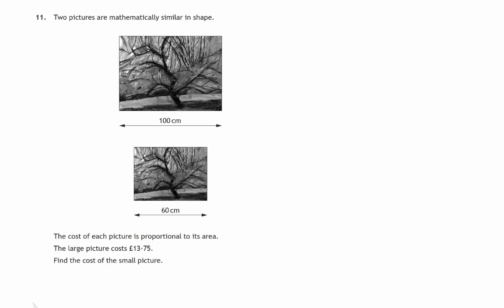Here are two mathematically similar shapes, a large picture and a smaller version of it. The smaller one is a reduction of the larger one, where the length reduces in the same proportion as the breadth reduces. That's what we mean by similar shapes. The cost of each picture is proportional to its area. The large picture costs £13.75, and we need to find the cost of the small picture.